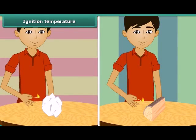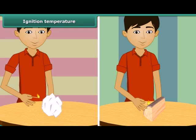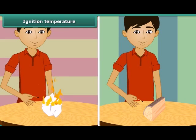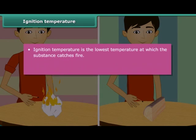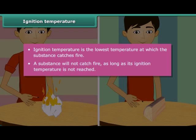We just saw that paper burns when lighted with a matchstick. Now bring the matchstick close to a piece of wood. The piece of wood does not catch fire. One lighted matchstick is not able to burn the piece of wood, but a piece of paper burned quickly. This is because the piece of wood has not reached its ignition temperature. Ignition temperature is the lowest temperature at which a substance catches fire.